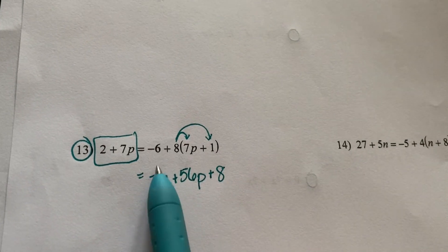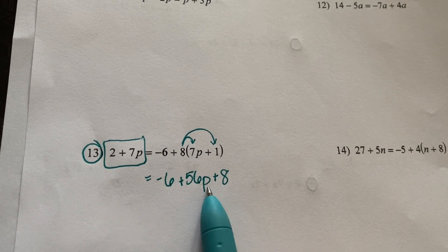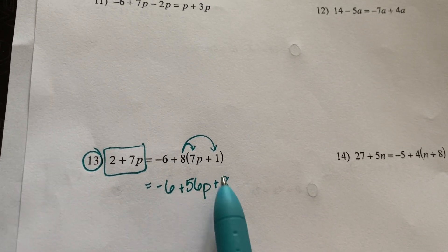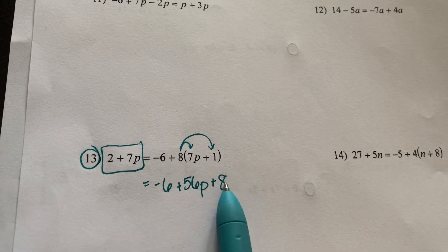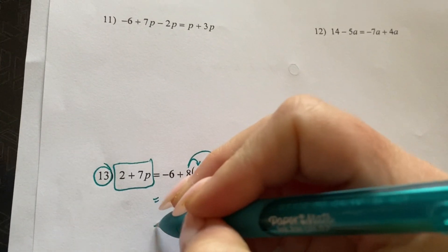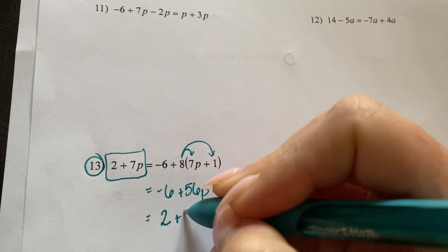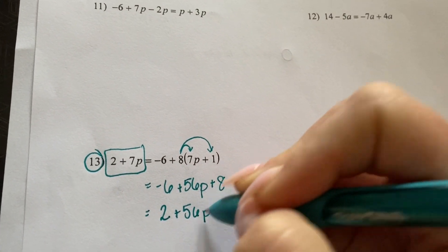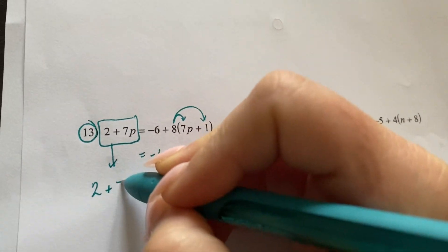Now, I can combine these two numbers because they do not have the variable. So I can combine these constants. A negative 6 and a positive 8 leave me with a positive 2. So now I'm going to bring this down: 2 plus 7P.